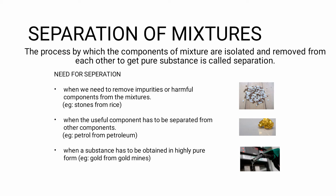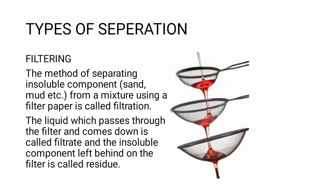First, we need to remove impurities or harmful components from the mixture — for example, stones from rice. Second, to separate useful components from other components — for example, separating petrol from crude oil. Third, to separate substances to achieve a highly pure form — for example, to separate gold from a gold mine.